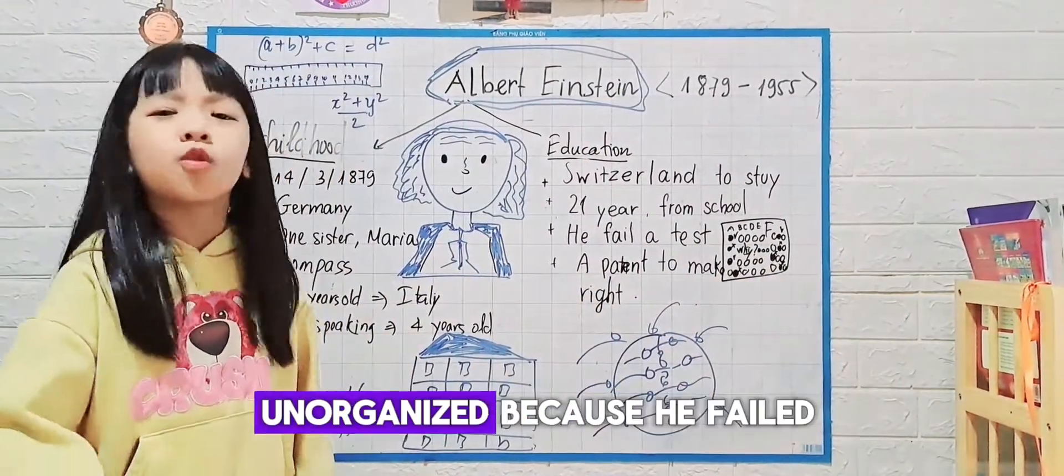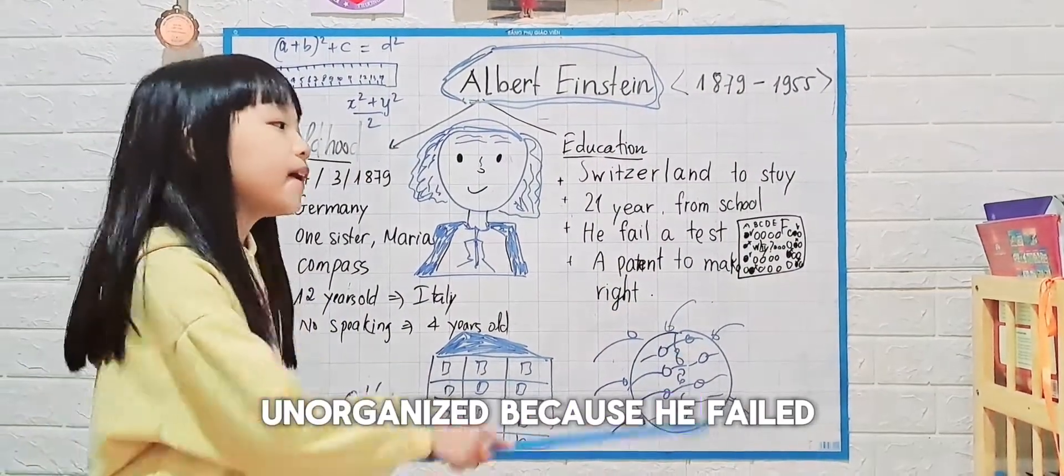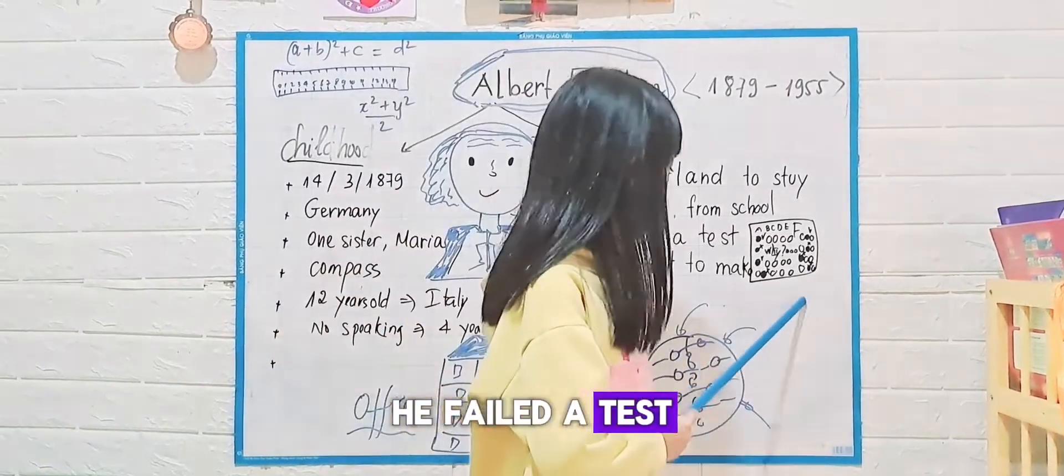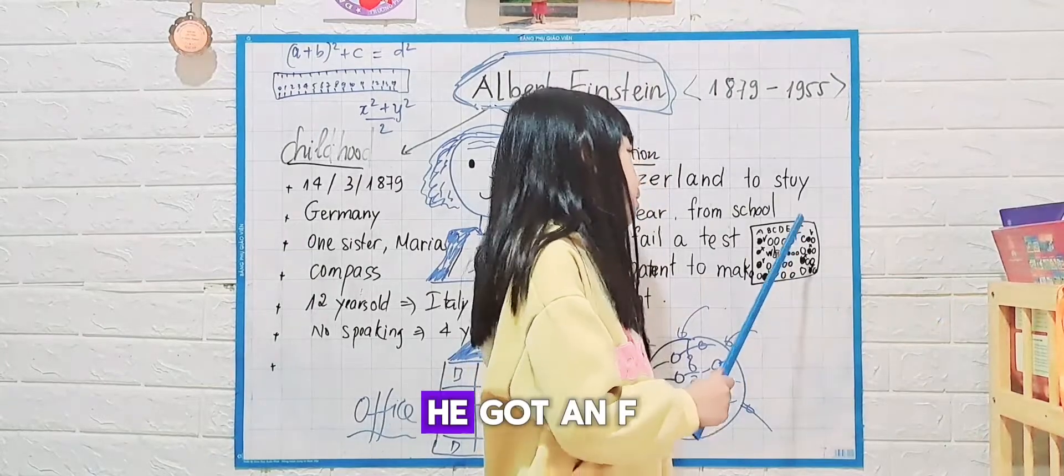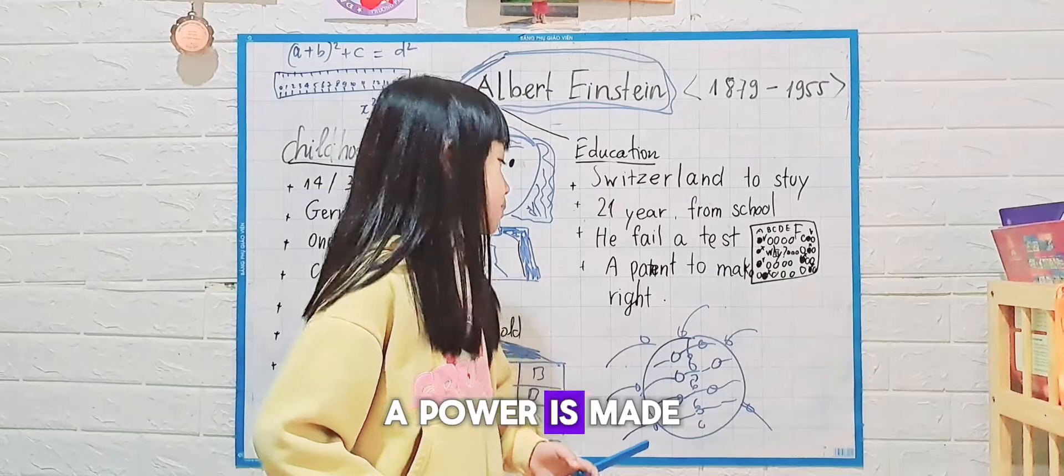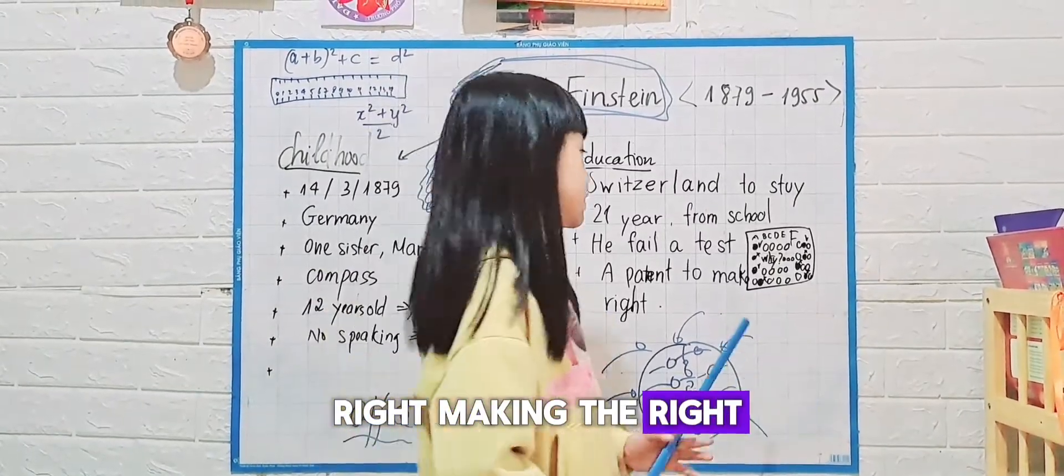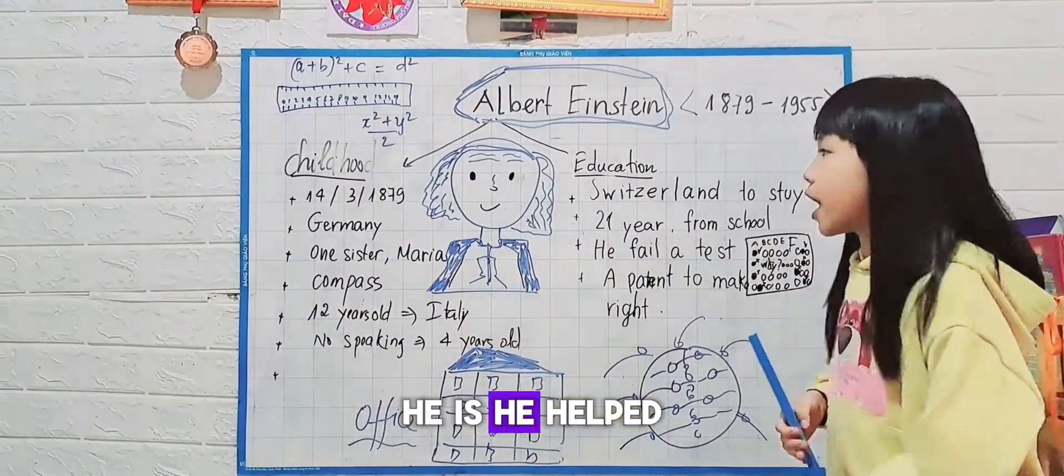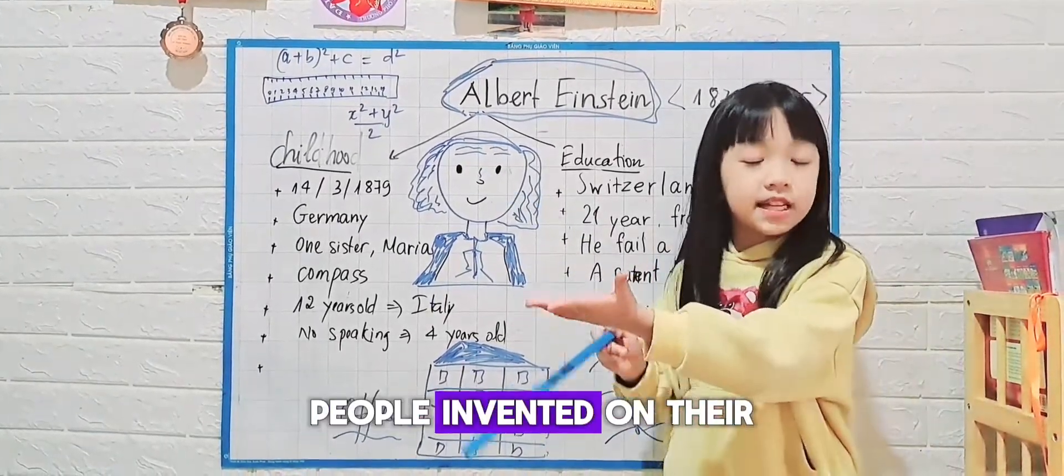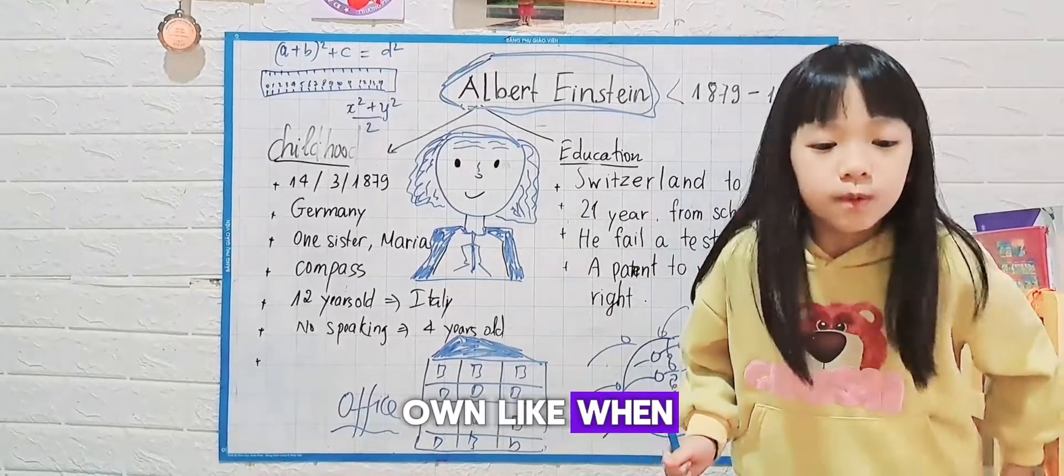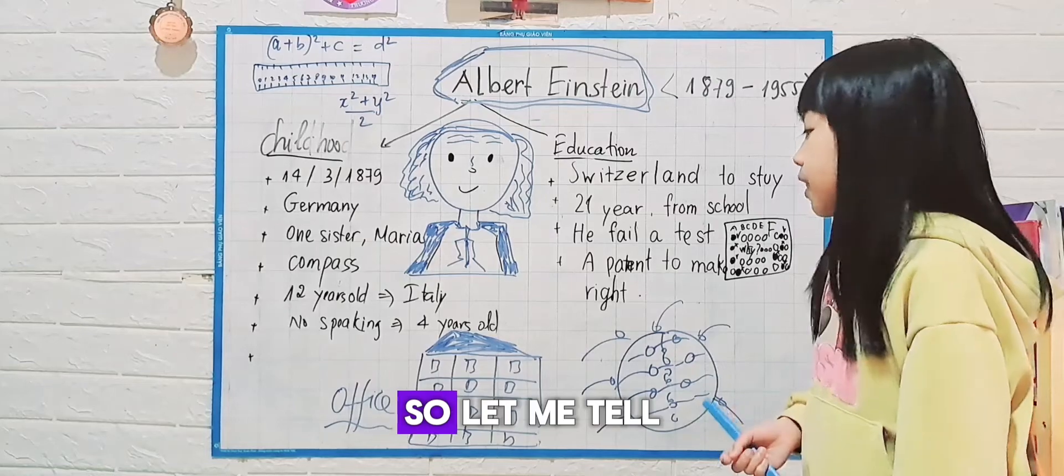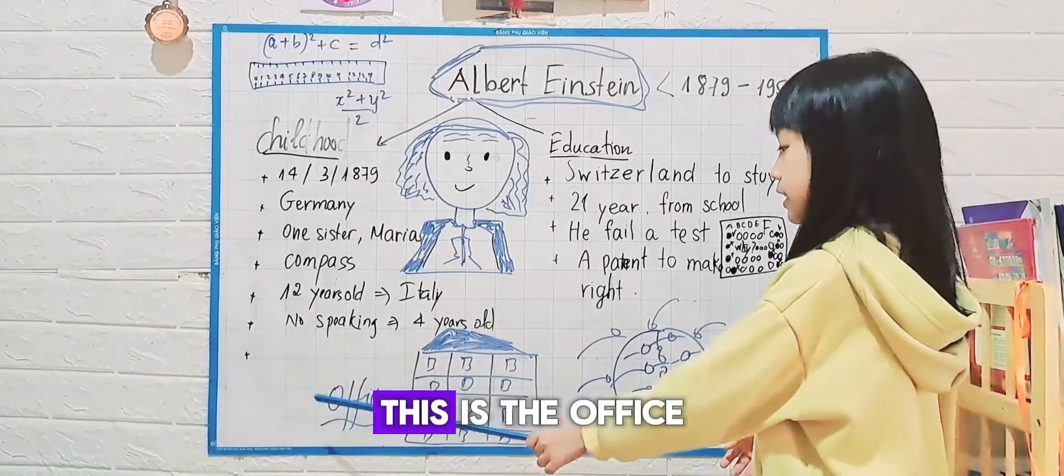When he became an adult, people said he was unorganized because he failed a test to get into college. He worked at a patent office, helping the government make the rights so people don't copy other inventors' ideas.